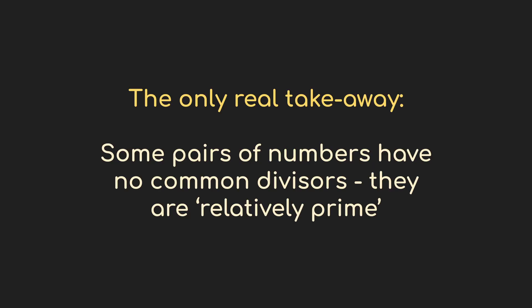And that's the end of our emergency math alert. The only thing you really have to take away is that sometimes numbers share divisors — like both six and ten are divisible by two — and sometimes there are no shared divisors, in which case we call them relatively prime. With that background in mind, let's look at Euclidean rhythms.